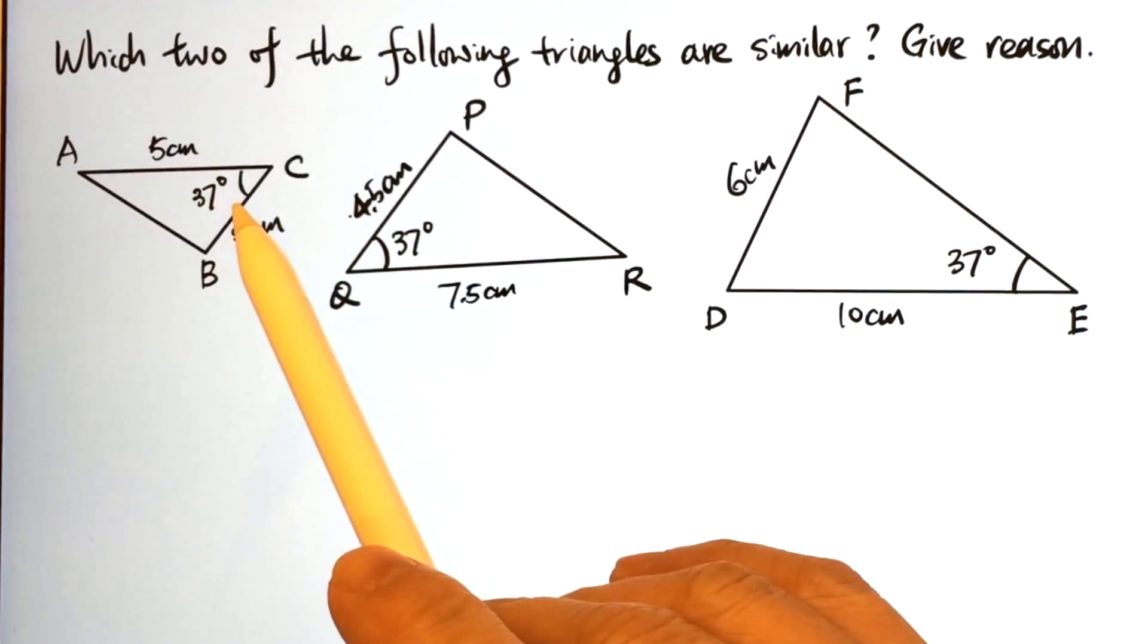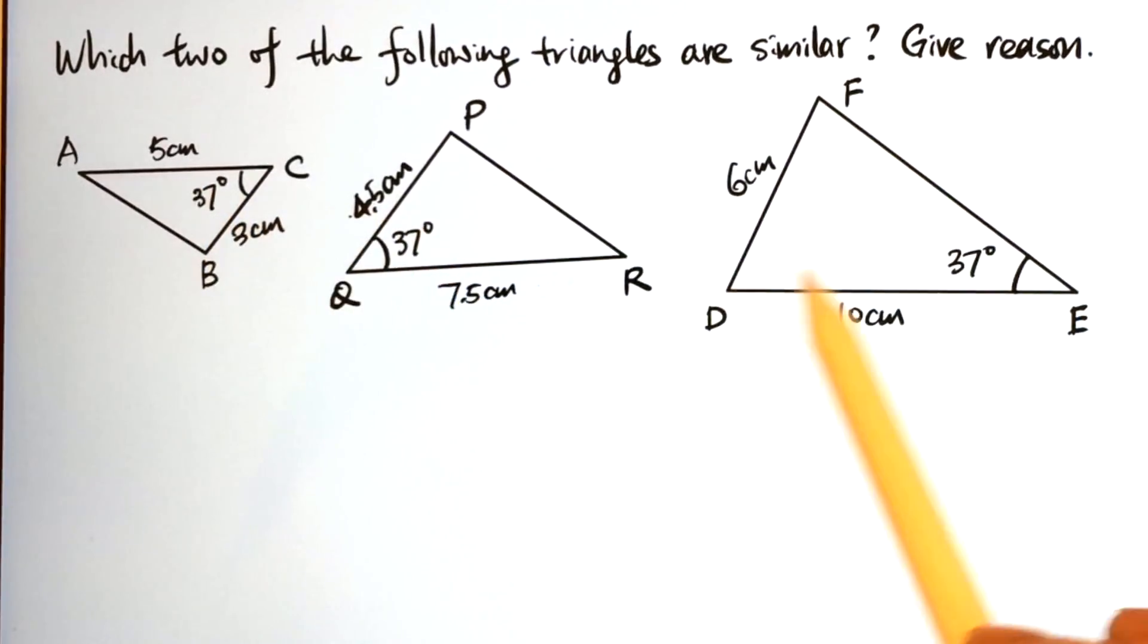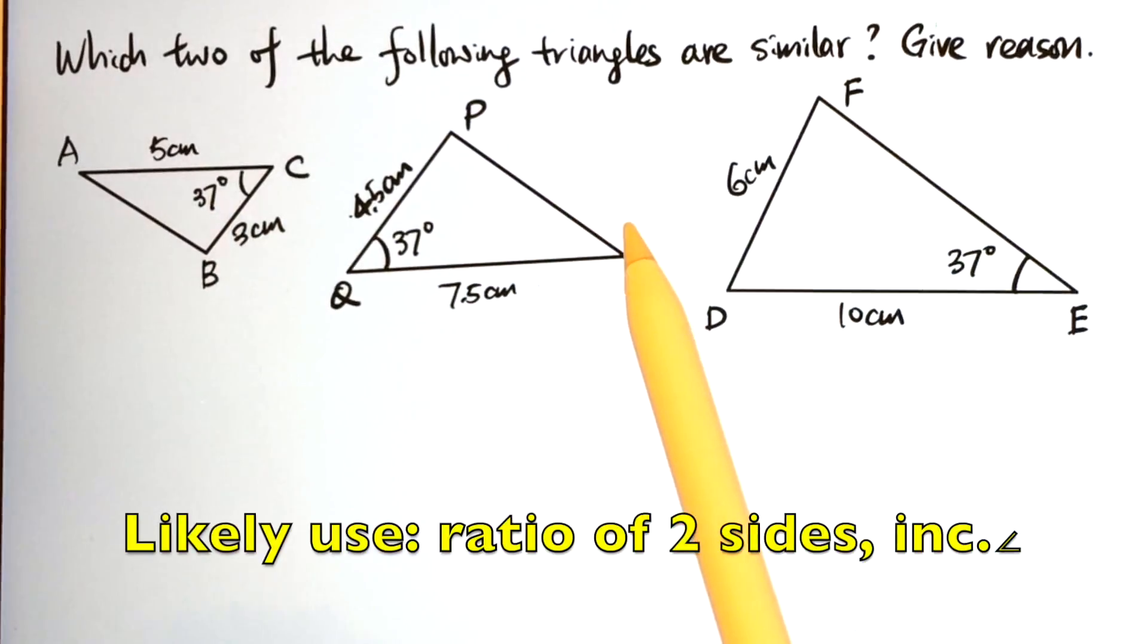Since we are given two sides in each triangle and one angle, it is very likely that we have to use ratio of two sides, included angle.